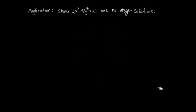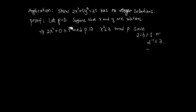Here's an example. We're asked to show this equation has no integer solutions — that no pair of integers will produce 21. The first part of the argument involves choosing p = 5, which is done by inspection: you have to look around and figure out which prime does the trick. The rest of the argument goes like this: suppose x and y are solutions, so we have actual numbers in the equation, and we can turn it into a congruence equation.